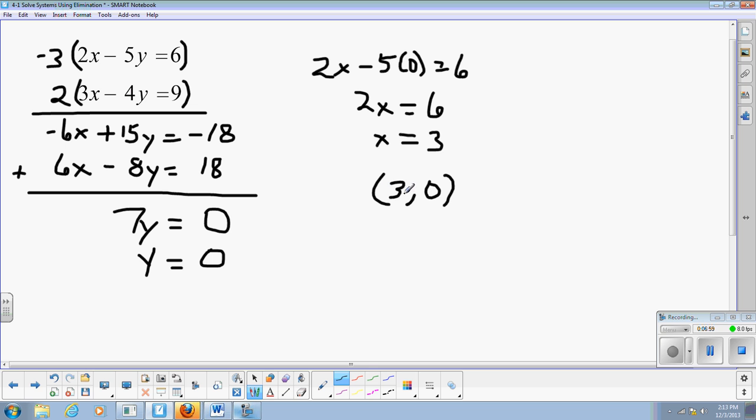So if we check that into both equations mentally, 2 times 3 is 6. 6 minus 5 times 0, so that's 0. 6 minus 0 is 6. Works in the top equation. 3 times 3 is 9. 9 minus 4 times 0. So that is also 0. 9 minus 0 is 9. So this solution works in both equations. Tells me my solution is correct.